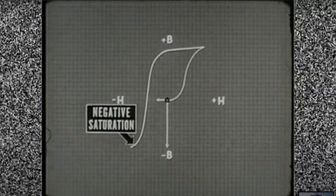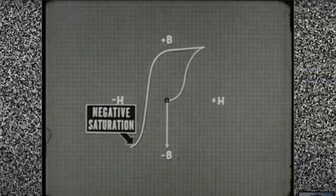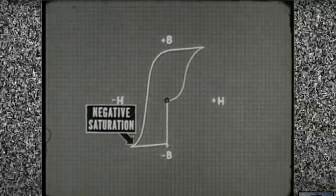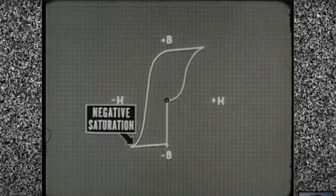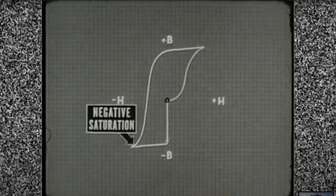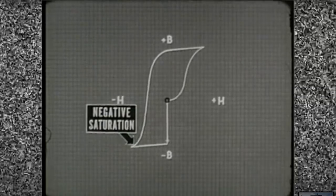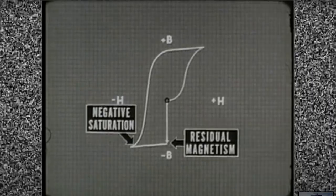If we reduce or stop the magnetizing force now, there will be little effect on the flux density of the core. The BH curve returns to zero on the horizontal magnetizing force scale, but it remains at almost the saturation level on the vertical flux density scale. In other words, there is residual magnetism in the negative direction, too.